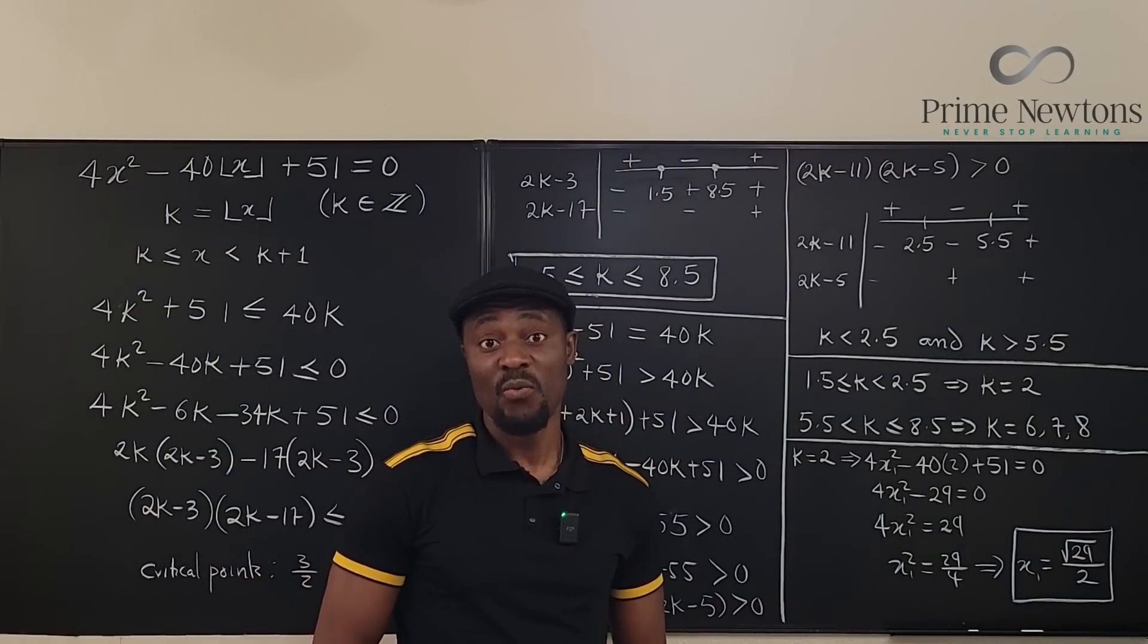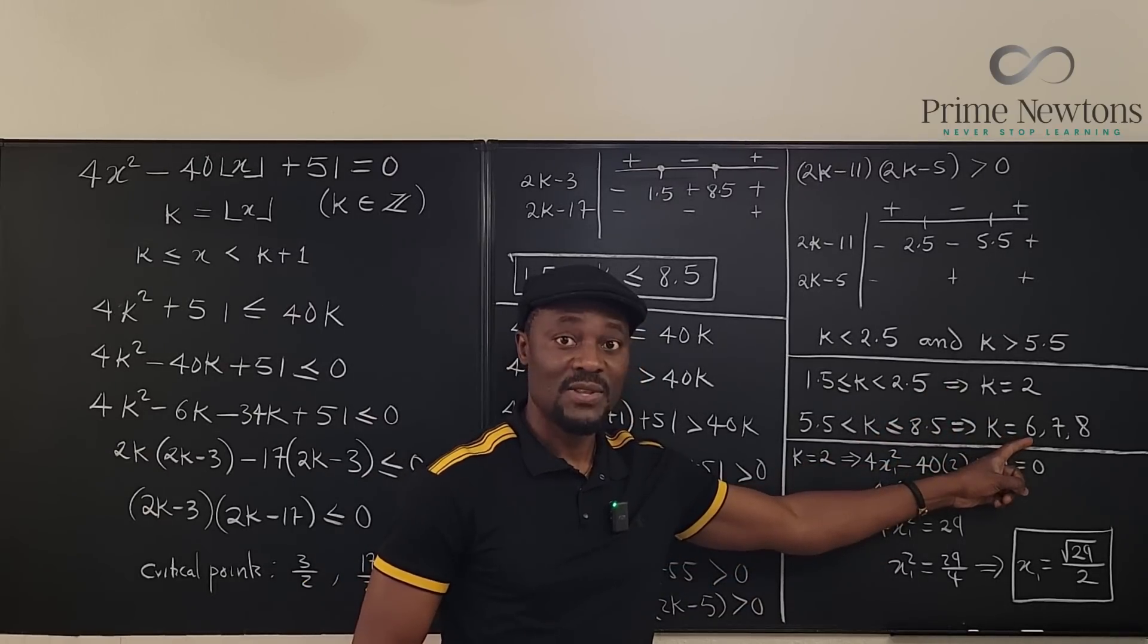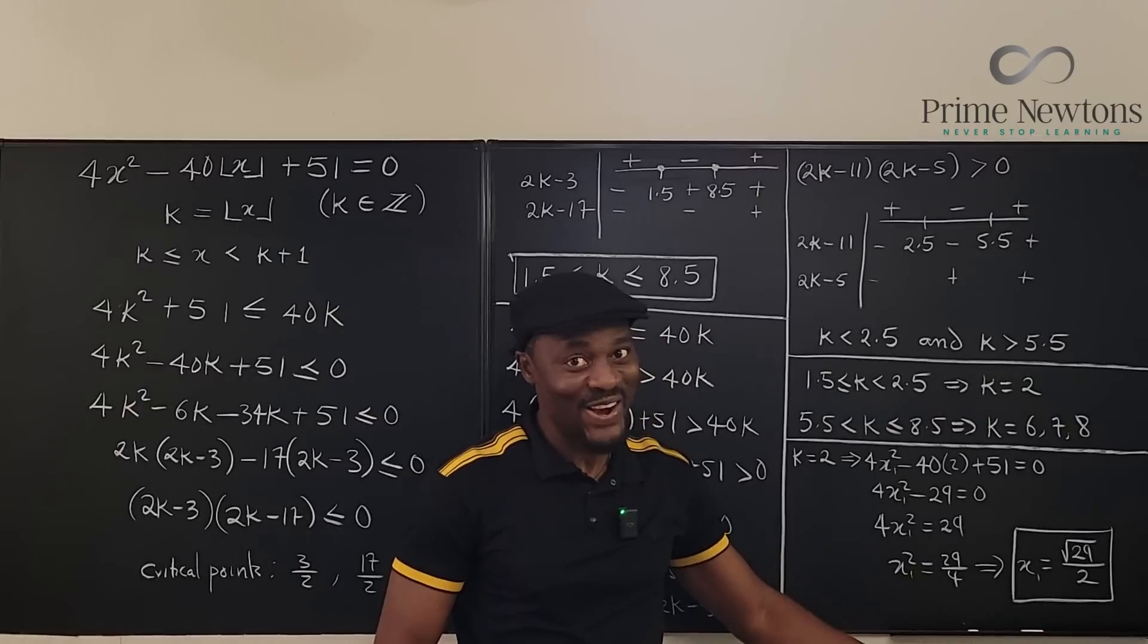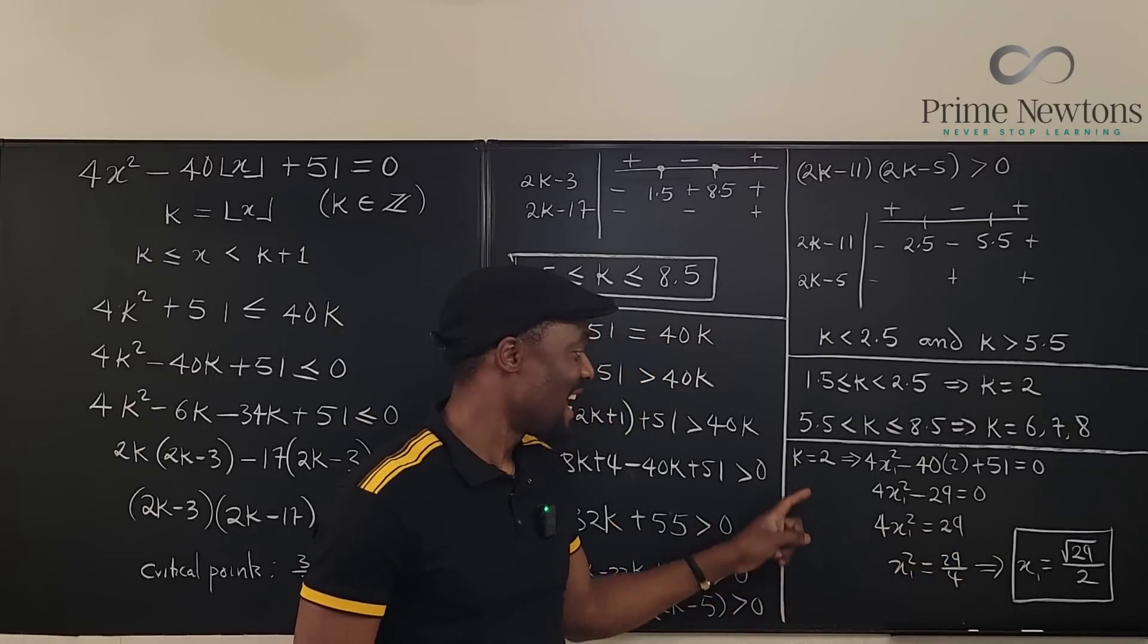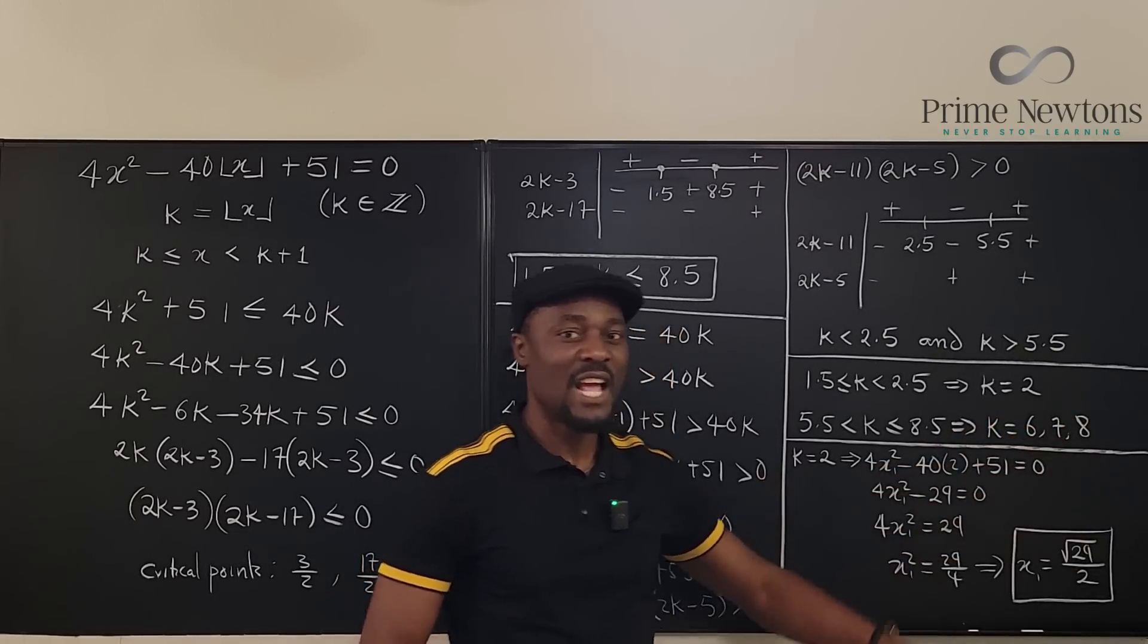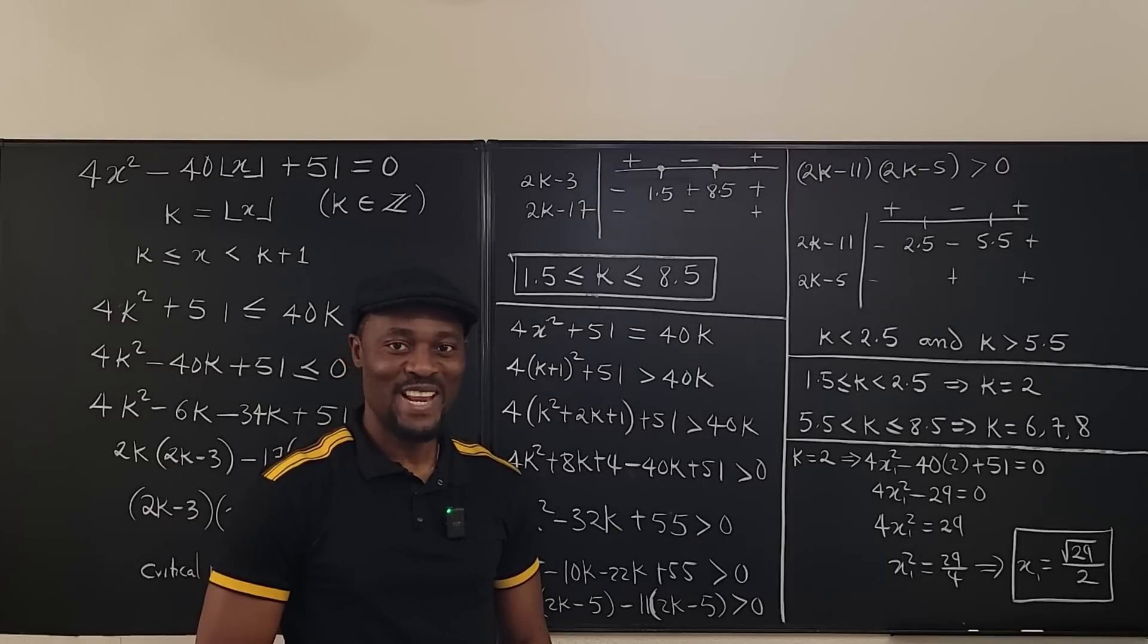Now, what is the second option? It's when your k is 6. The third option is when k is 7 and when k is 8. Am I going to solve it? No. All you have to do is repeat exactly what I did. Instead of using k equals 2, use k equals 6, 7, 8. And your answers should look like this. Never stop learning. Those who stop learning, stop living. Bye-bye.